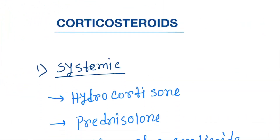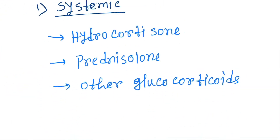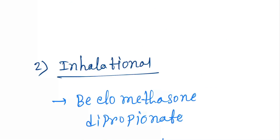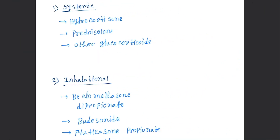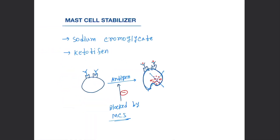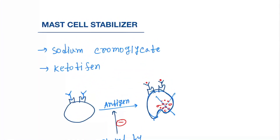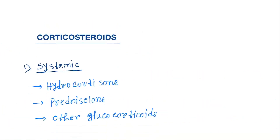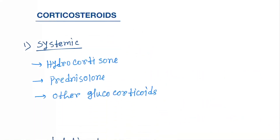As a result, bronchoconstriction will not occur. Next are the corticosteroids, which act by different mechanisms. The drugs under mast cell stabilizers are sodium cromoglycate and ketotifen.